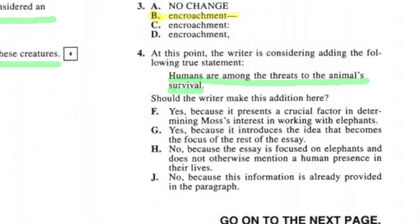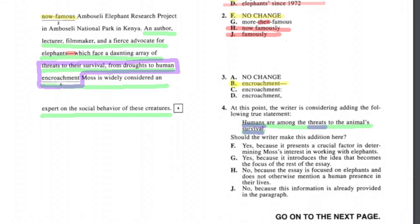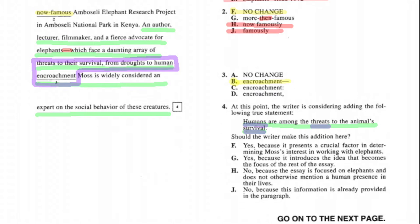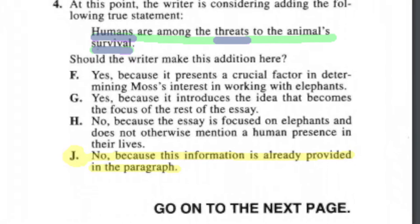Question four is our first rhetorical question. The writer is considering adding: 'Humans are among the threats to the animal's survival.' Two options say yes, two say no. To get this right, I needed to have read the previous sentence, which already says these elephants face threats 'from droughts to human enrichment.' Since the proposed addition is already covered in the passage, the best answer is J — no, don't add it because this information is already provided.